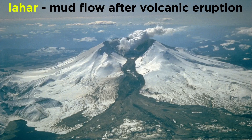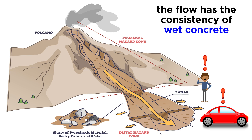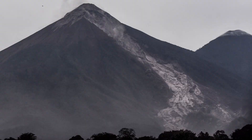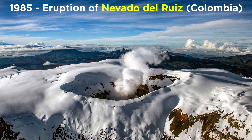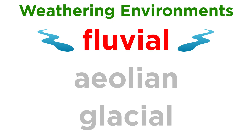Mud flows are like debris flows, but muddier and therefore better flowing. Lahars are a type of mud flow where a volcanic eruption triggers a rapid melting of snow and glacial ice, which mixes with volcanic sediments and flows down the mountain. Mud and debris flows have the consistency of wet concrete, and due to their high density, are excellent at entraining more and more sediment as they move along, making them extremely dangerous. Lahars are actually the greatest cause of death during volcanic eruptions. During the 1985 eruption of Nevado del Ruiz in Colombia, about 25,000 people died in towns 46 kilometers from the volcano as the lahars overran and buried their towns.